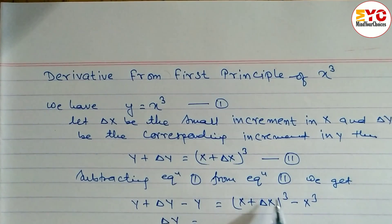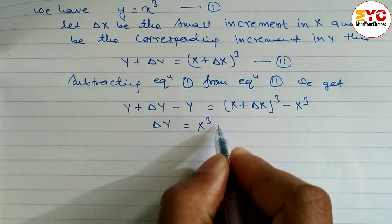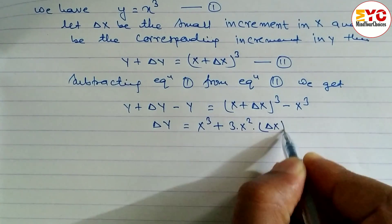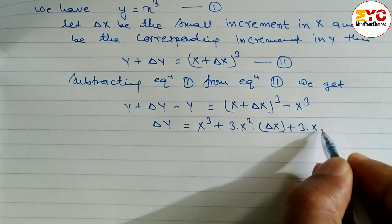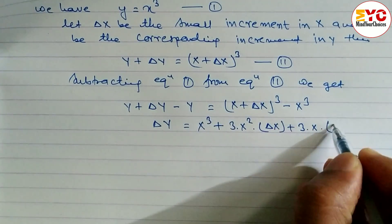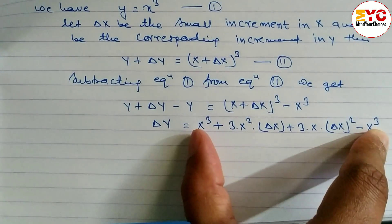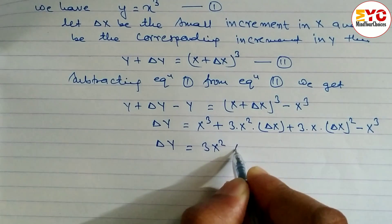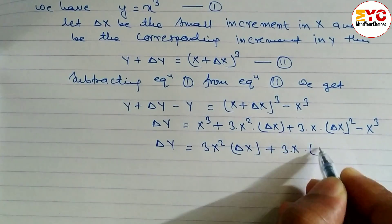Here we have to use the formula of a plus b whole cube. The formula is: a cube plus 3a squared b plus 3a b squared plus b cube. So with a = x and b = del x, we expand. You can see here x cube and x cube cancel, and remaining is del y is equal to 3x squared del x plus 3x del x whole squared.